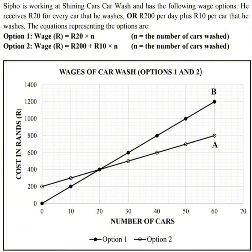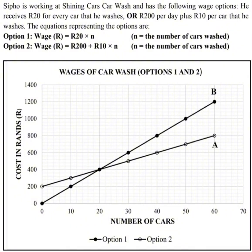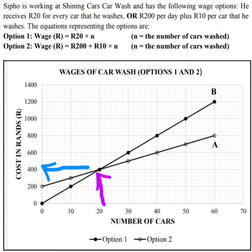If you look at the point 400 and 20 on the graph, the two graphs cross each other and share a point. We call that the break-even point — that is where option A and option B are equal. It means that if Sipo washes 20 cars, he will receive 400 rand under either option.